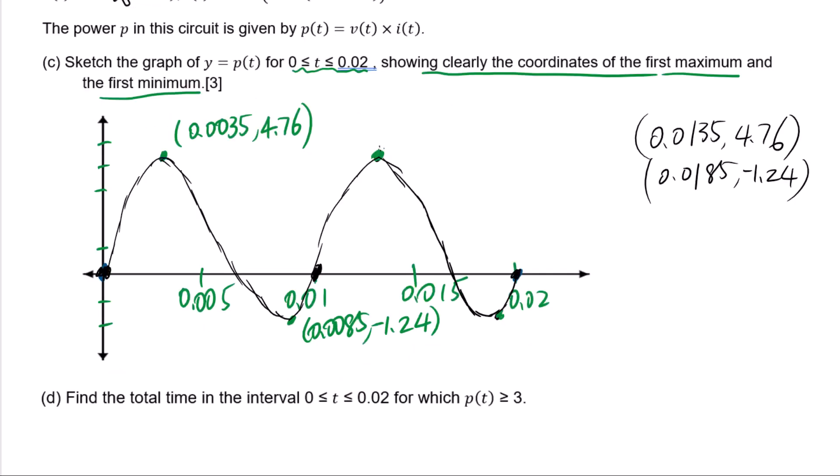Let's go to d. Find the total time in the interval 0 ≤ t ≤ 0.02 for which p(t) ≥ 3. p(t) = 3 means this line. Greater than or equal to 3 means above p(t) = 3 will be these two parts. We need to figure out t1, t2, t3, t4. t2 - t1 + t4 - t3 that will be the total time.